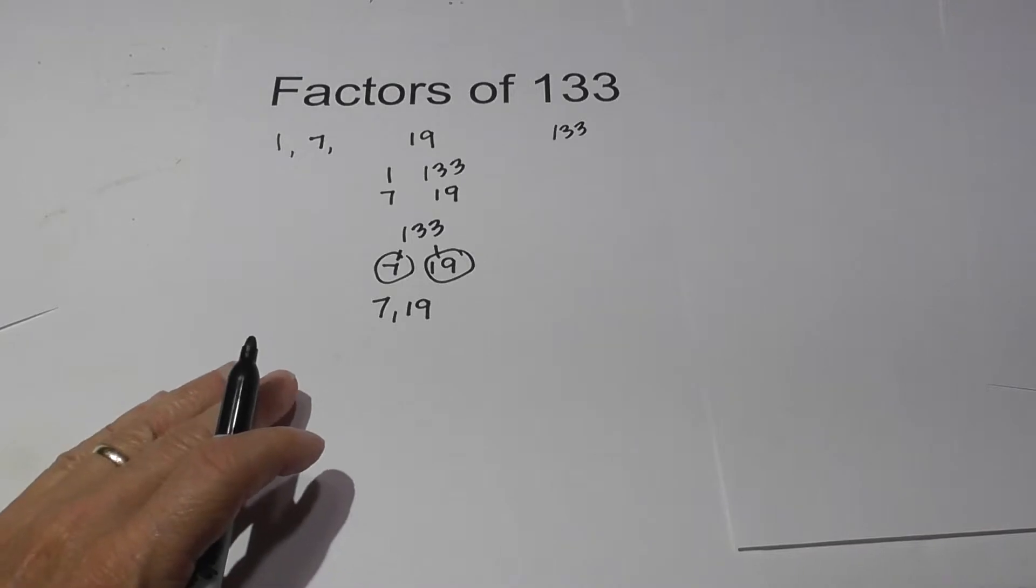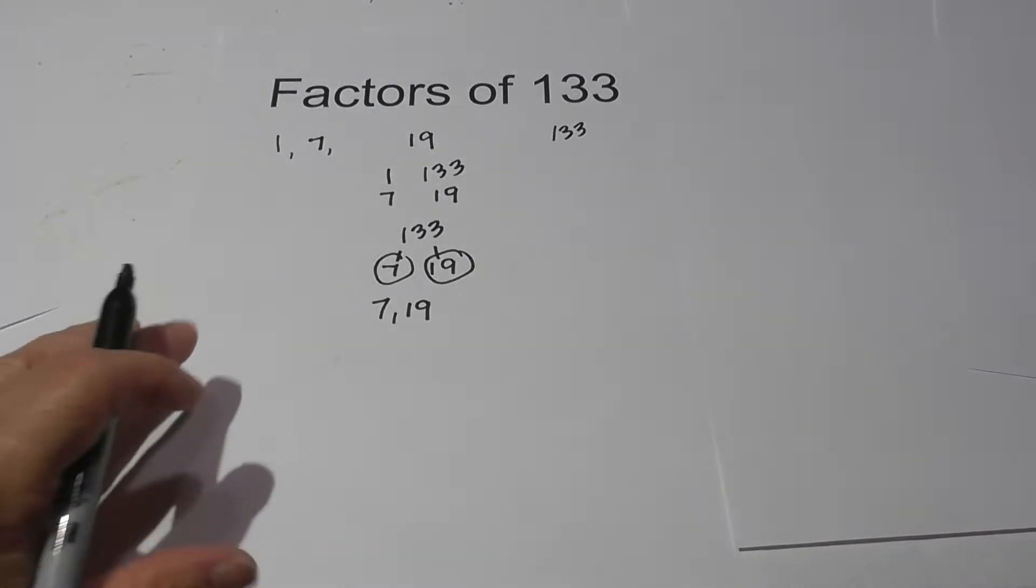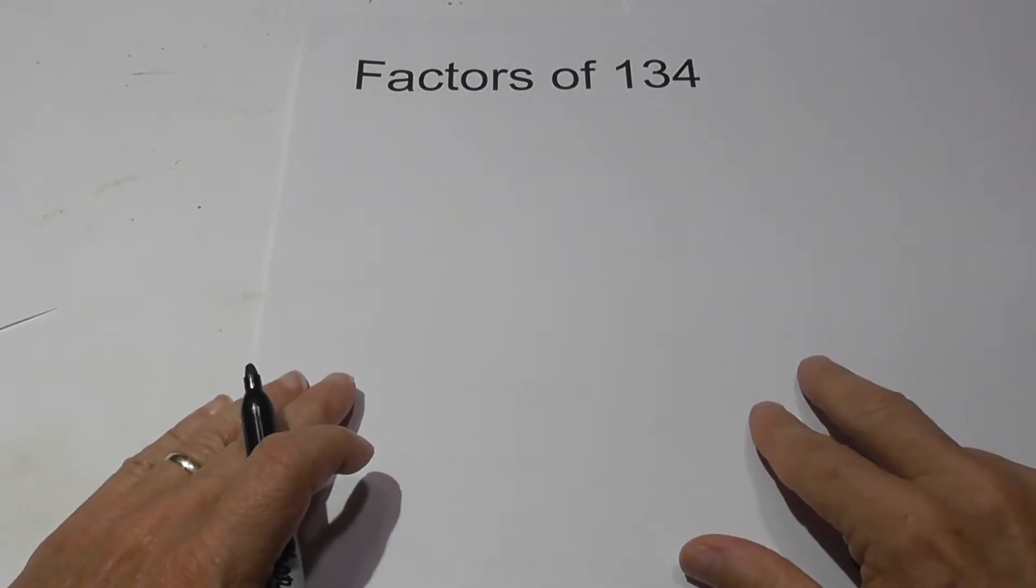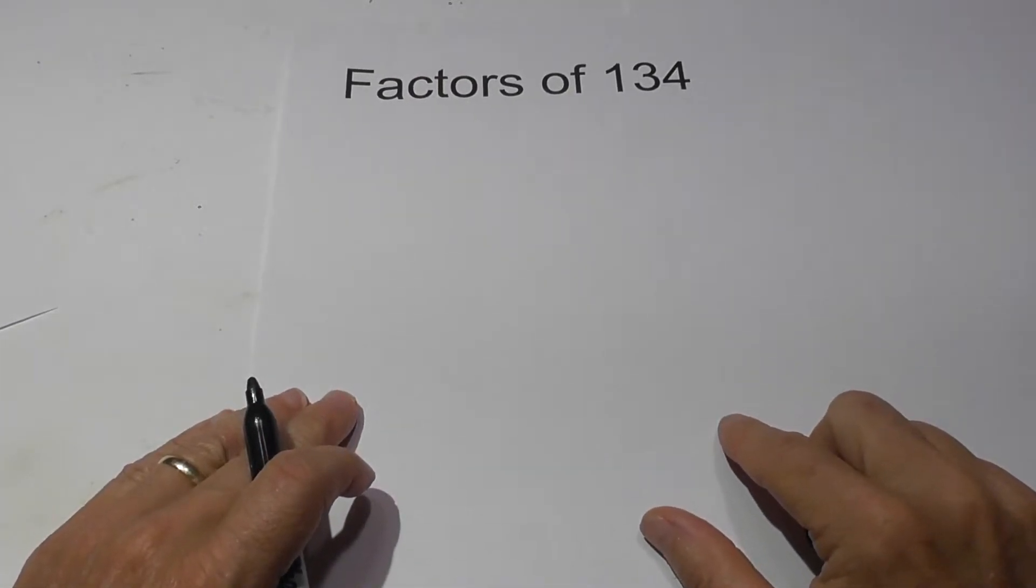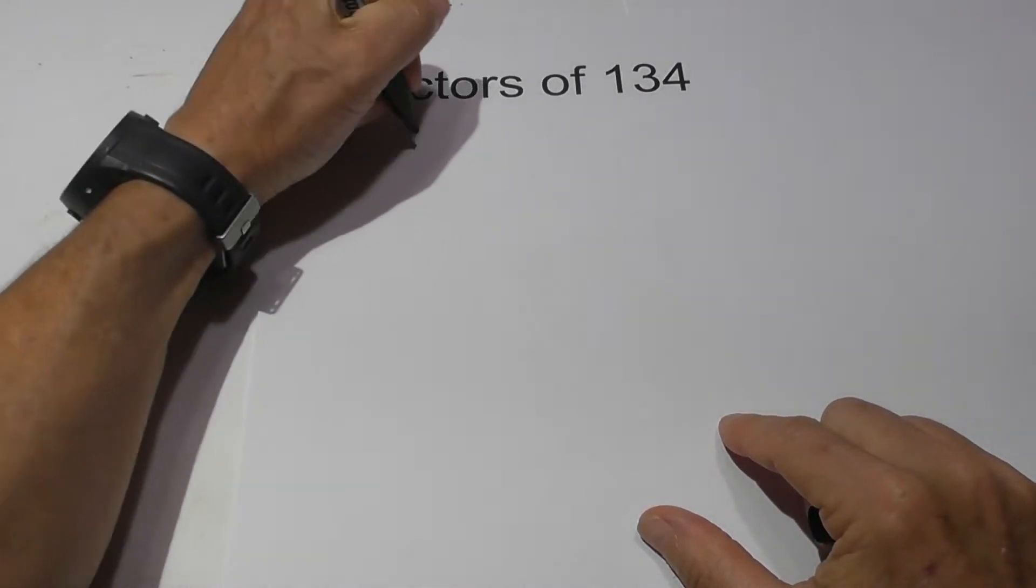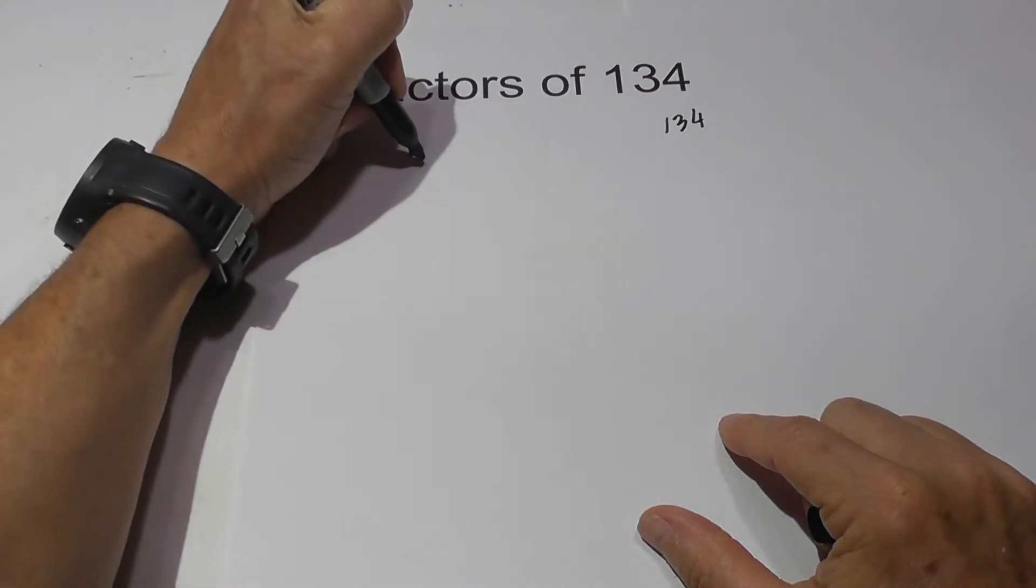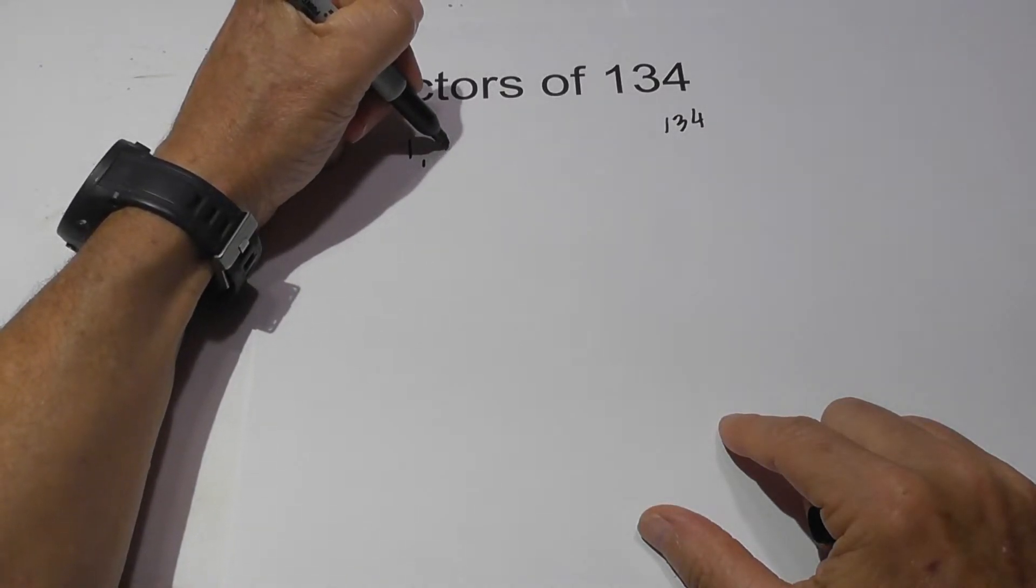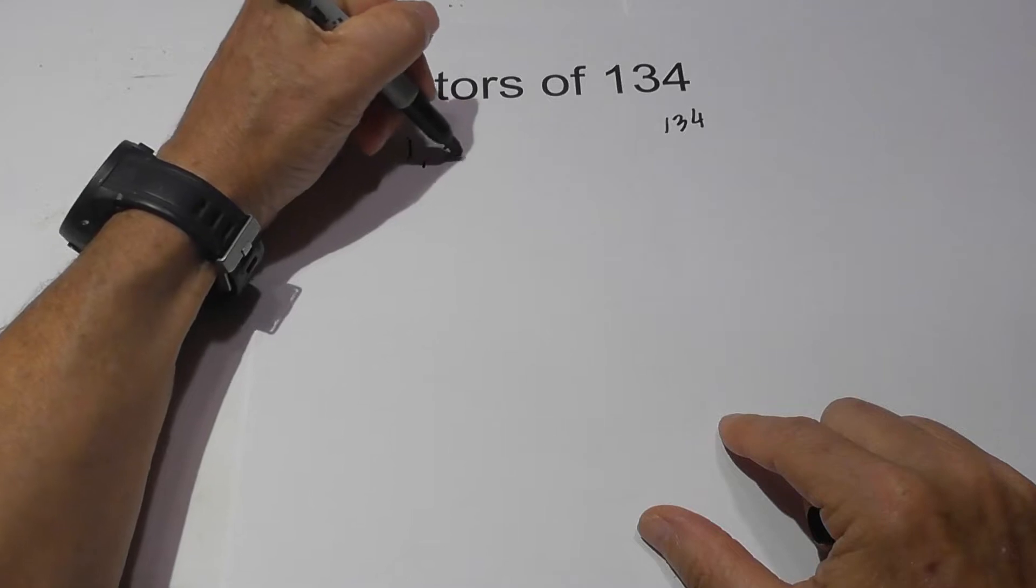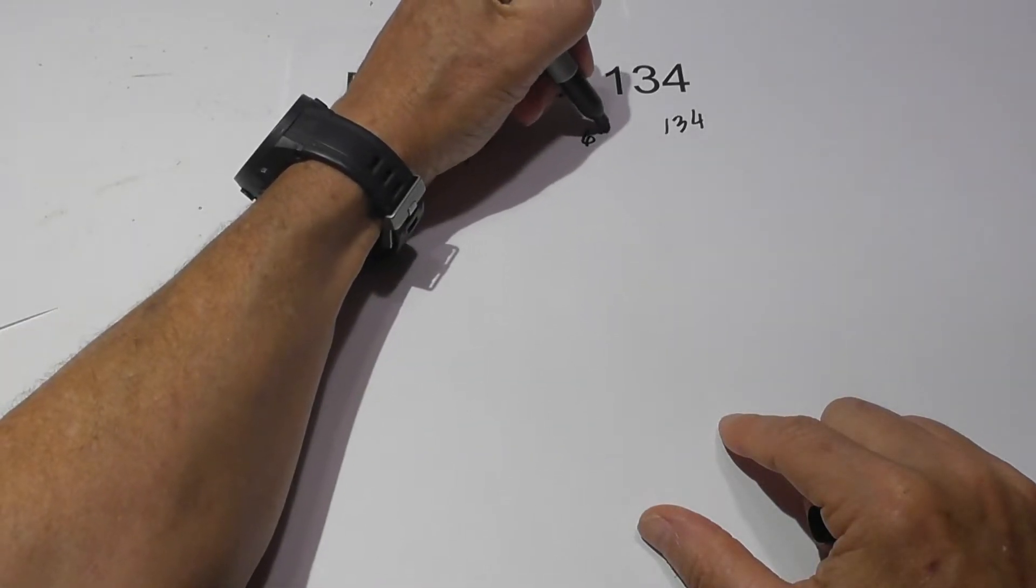Now let's take a look at the factors of 134 and the factors of 134 is a composite number. So let's begin with 1 times 134. And then we have 2 times 67.